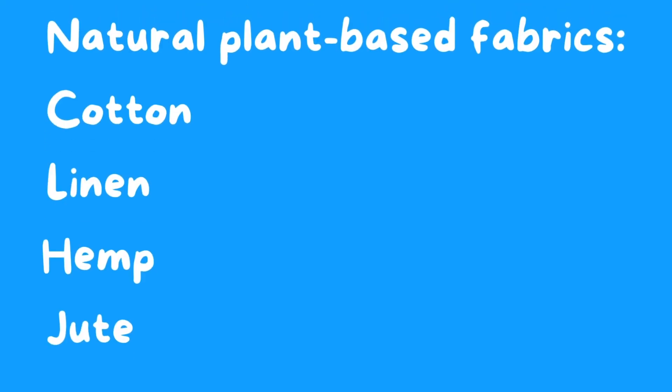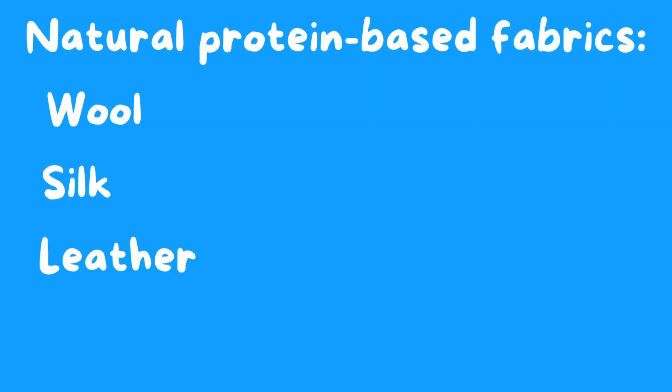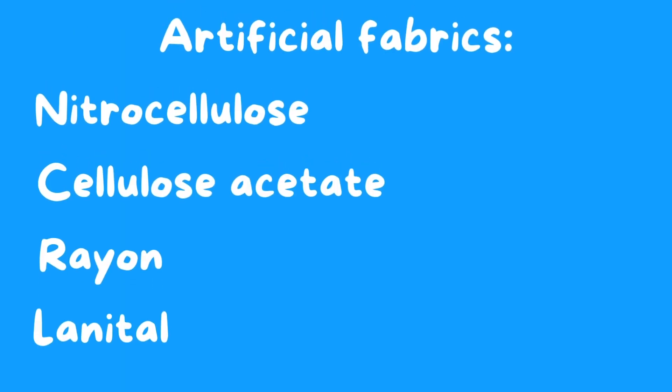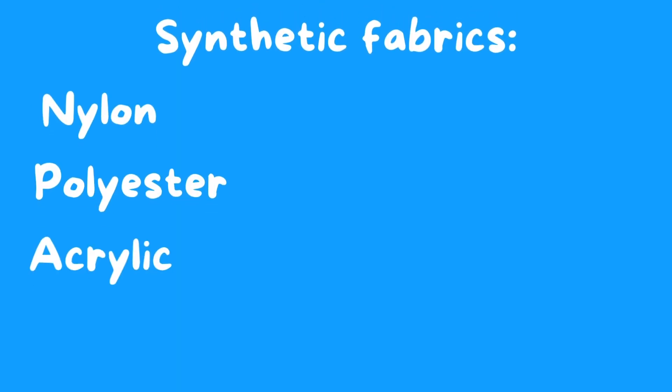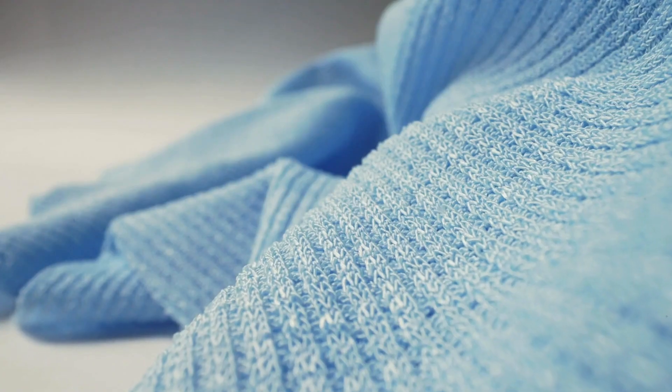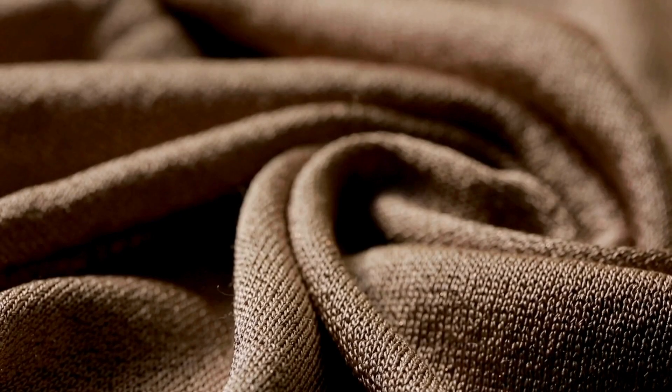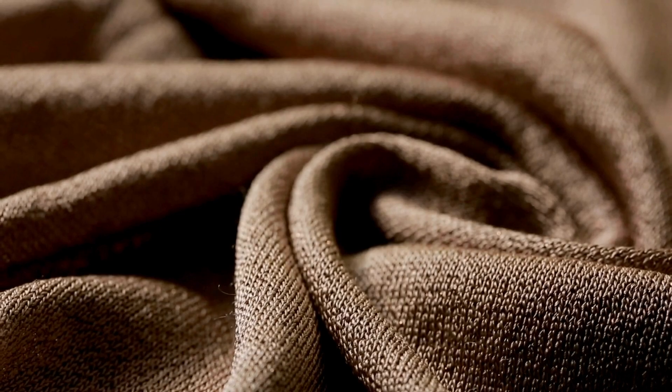The most used natural plant-based fabrics are cotton, linen, hemp, and jute. The most diffused natural protein fabrics are wool, silk, and leather. Regarding artificial fabrics, we can consider nitrocellulose, cellulose acetate, rayon, and lanital, while nylon, polyester, and acrylic are synthetic fabrics. In this video, I'm going to explain to you the composition of some of these fabrics.